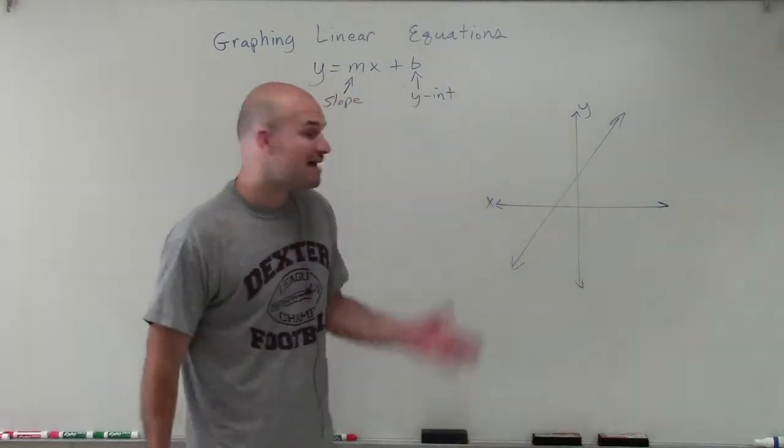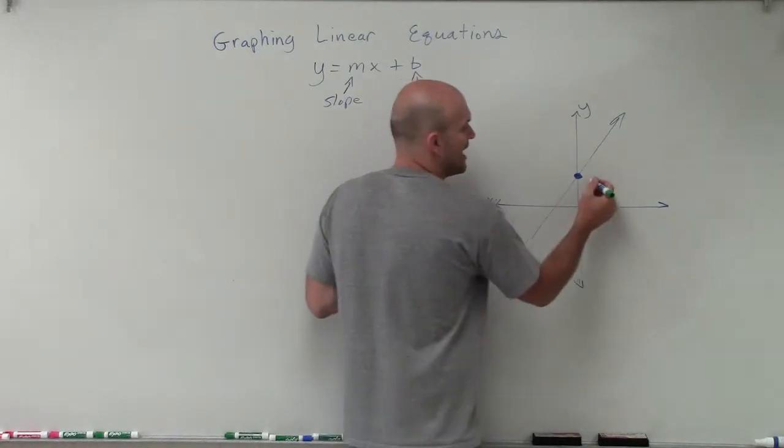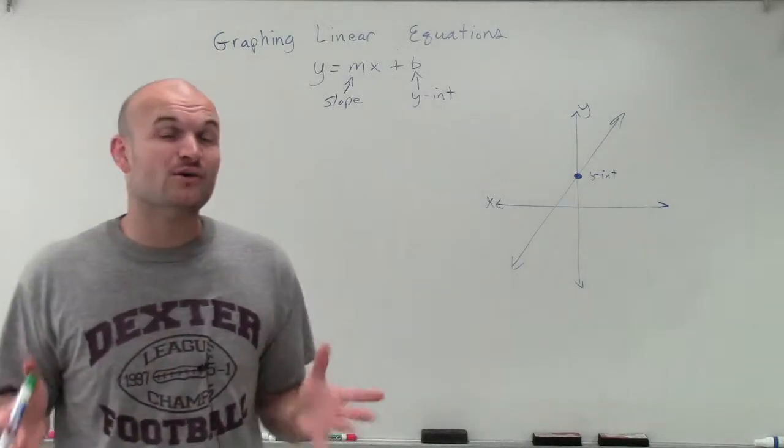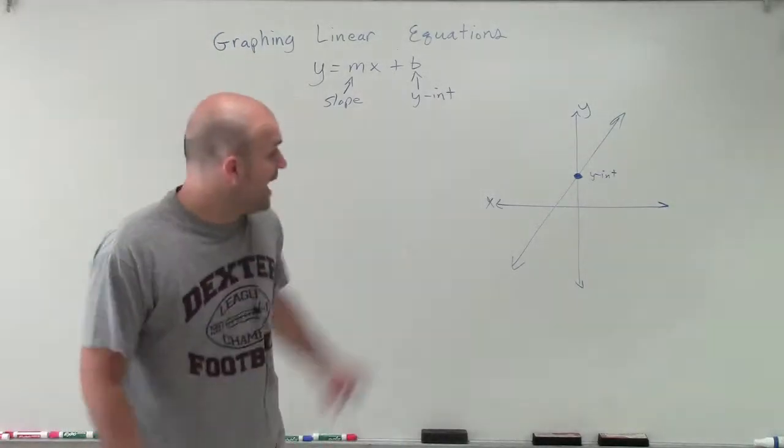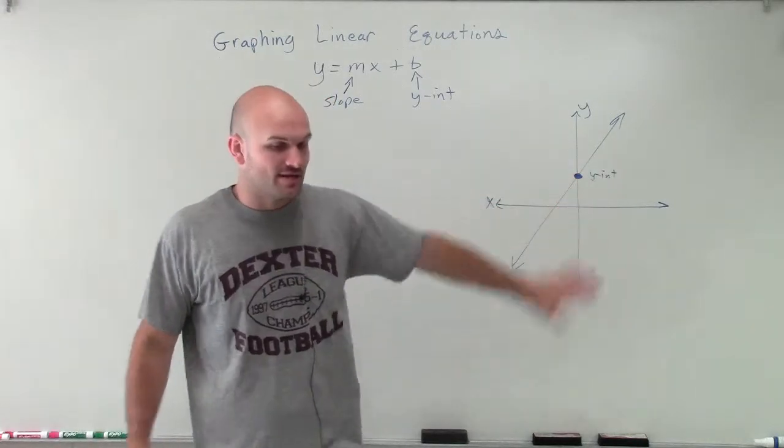Now, on this graph, the y-intercept is where the graph crosses the y-axis. So if I'm given an equation and I know exactly what the y-intercept is, I know this point. That's where the graph crosses the y-axis.